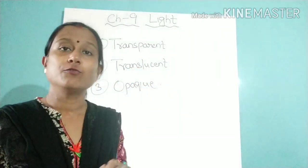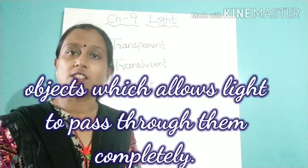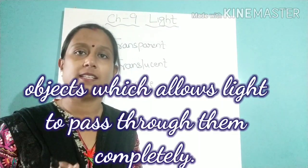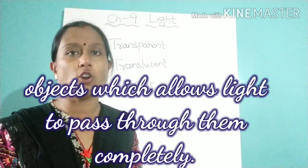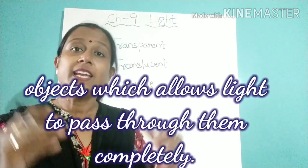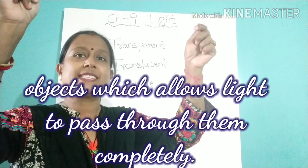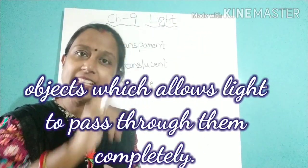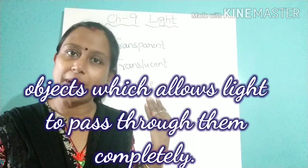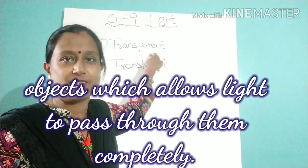Transparent object — those objects through which light passes completely are known as transparent objects, such as plastic or glass. Take a glass or a plastic and place it in front of a light — you can see that the light rays completely pass through it. Such objects are known as transparent objects.